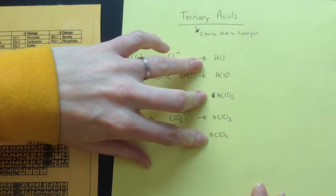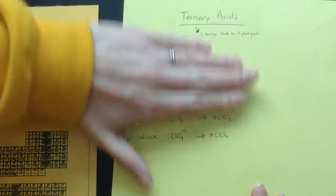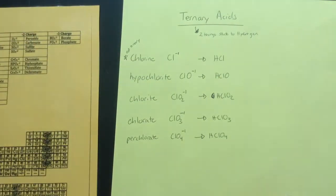And this one becomes HClO3, and this one becomes HClO4. So these are five different acids here. These are the ternary ones, that's a binary acid because it only has two things in it, binary two.